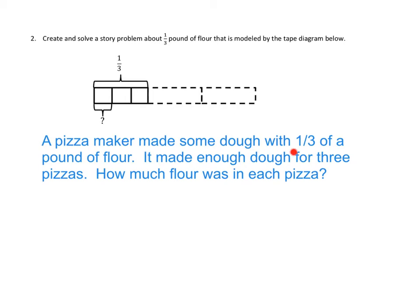Our pizza maker made some dough with one third of a pound of flour, so we started off with one third of a pound. It made enough dough for three pizzas, so there's one, two, three pizzas. How much flour was in each pizza? This amount.